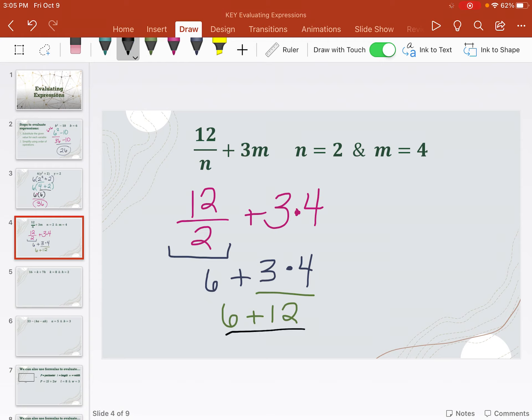Now I can do this multiplication. So 3 times 4 is 12. And now I can finally do this addition. 6 plus 12, which is 18. And that's my answer for this problem.